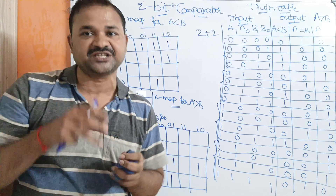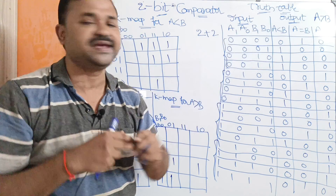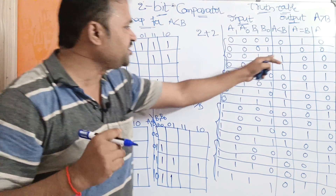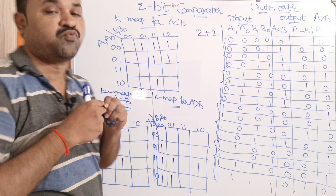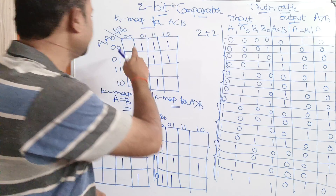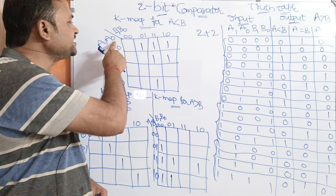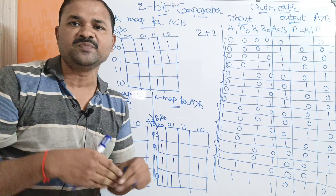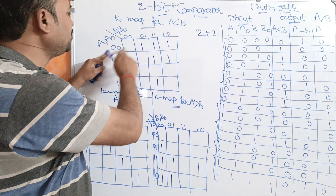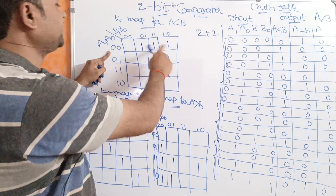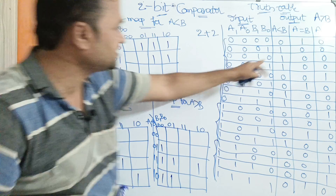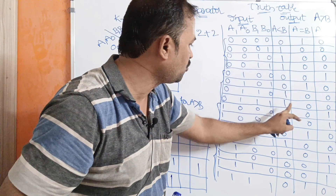Now let us derive the expressions for A less than B, A equal to B, and A greater than B using Karnaugh maps. First, let us simplify the expression for A less than B. This is a four-variable Karnaugh map where the left-hand side represents A1, A0 and the right-hand side represents B1, B0. The possible combinations are 00, 01, 11, 10. For A less than B, the output is 1 for six combinations, and we fill those cells accordingly.